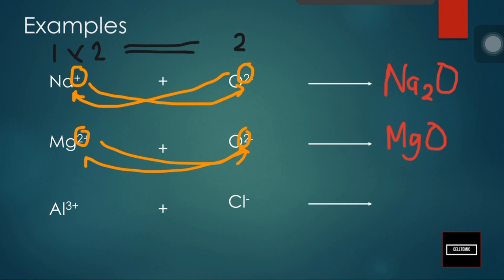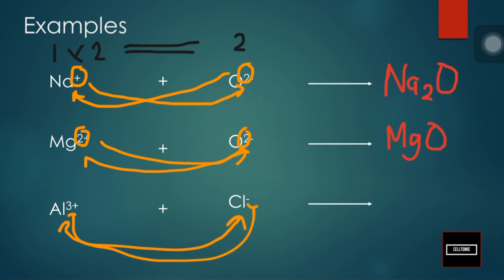Let's look at our last example: Al3+ and Cl−. We apply the crisscross method and we are left with AlCl3. Aluminum has 3 electrons in its valence shell that it can give, and chlorine can only take one electron to form a full valence shell. So we need three chlorine atoms for aluminum to give out all three of its electrons.